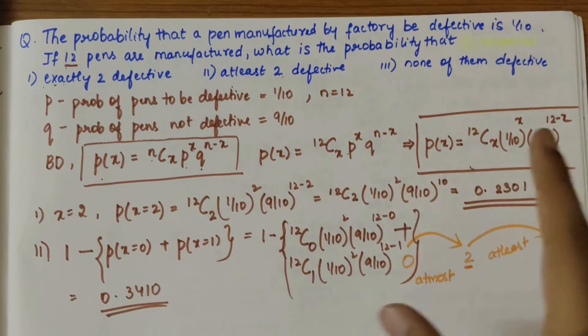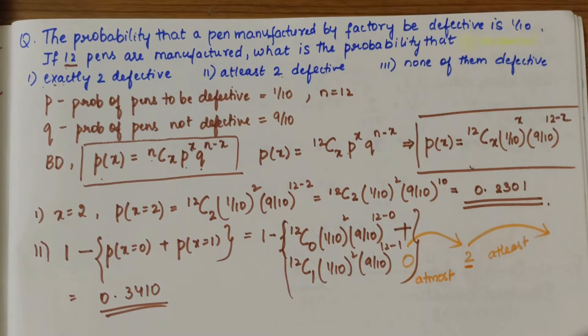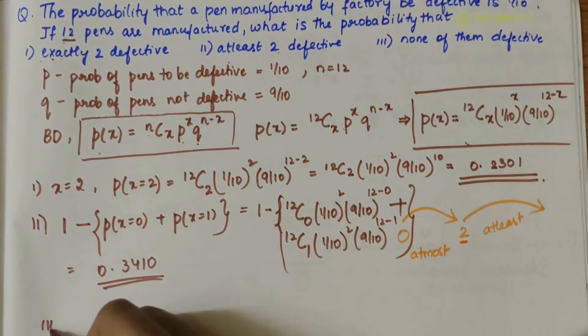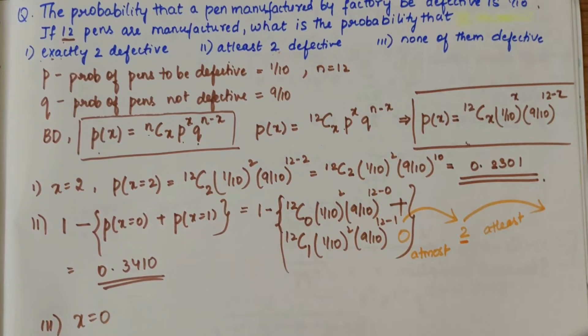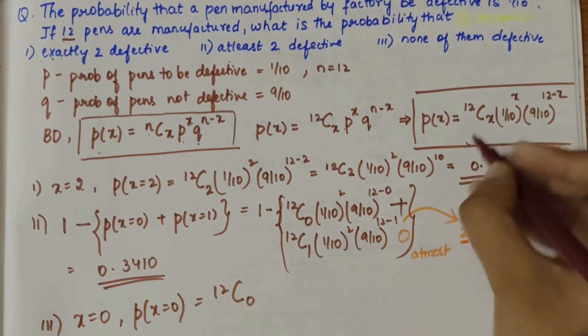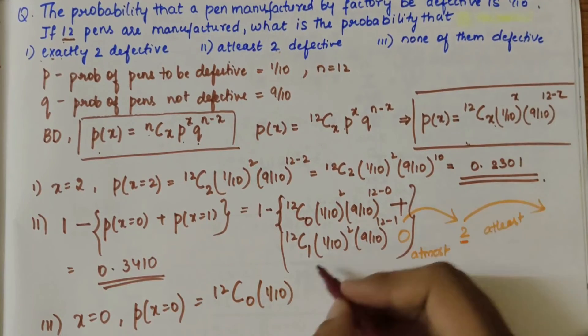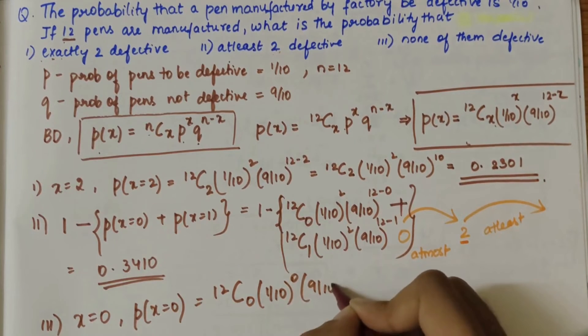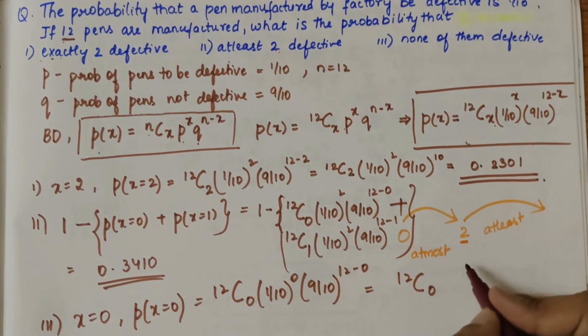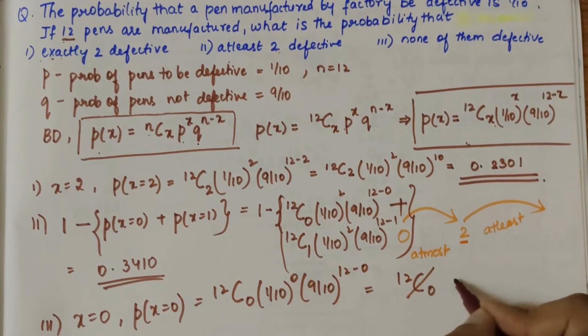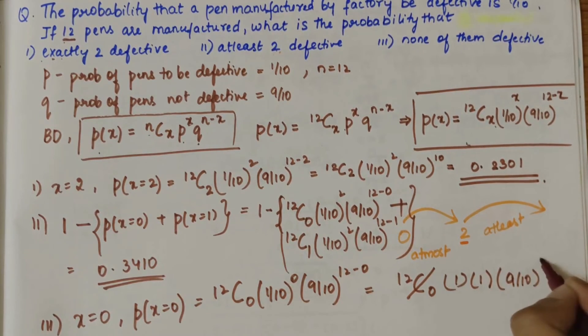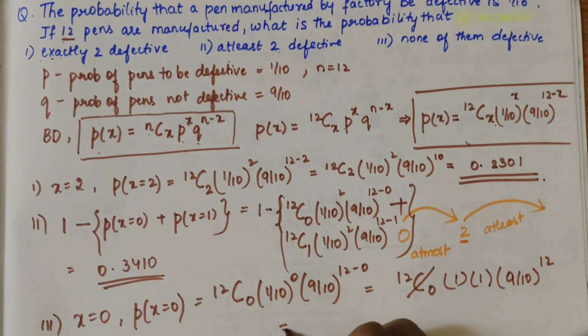The last part is none of them are defective, so X is equal to zero. P(X=0) is 12C0 (1/10)^0 times (9/10)^(12-0). That will be 12C0 which is 1, times 1, times (1/10)^0 which is also 1, and (9/10)^12. If you solve this you'll get the answer 0.2824.